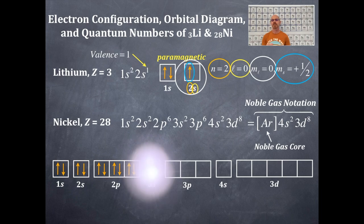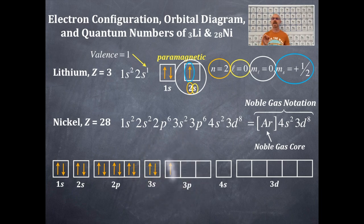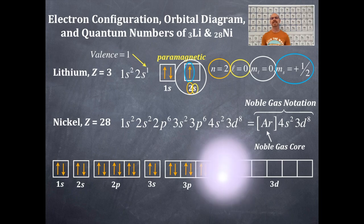Now the 3S box, I got an up and I got a down. I'm going to do the same thing with the 3P that I did with the 2P. That's an up and an up and an up. And then I'm going to backfill it and a down and a down and a down. And then I'm going to do the 4S. That's an up and that's a down.